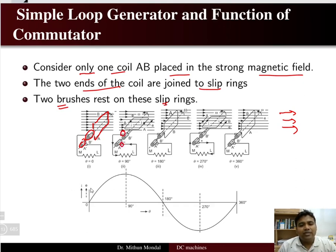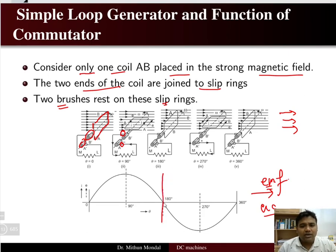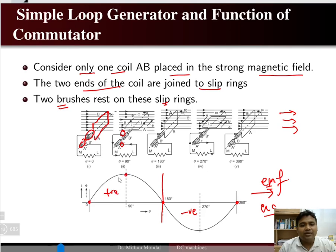The EMF produced due to the rotation of the conductor in the magnetic field will be an alternating current. At 180 degrees, the EMF will have the positive direction from 0 to 180 degrees, and from 180 to 360 degrees it will have a negative direction. At theta 90 degrees you will have the maximum EMF, and at 270 degrees you will have a negative maximum EMF.